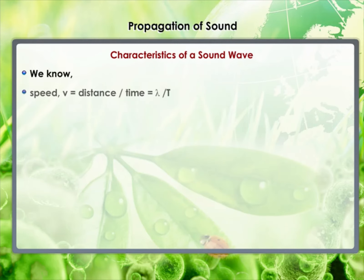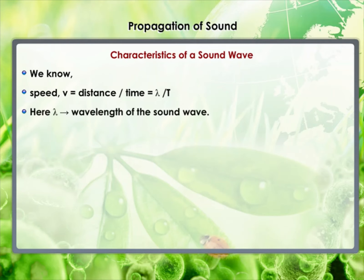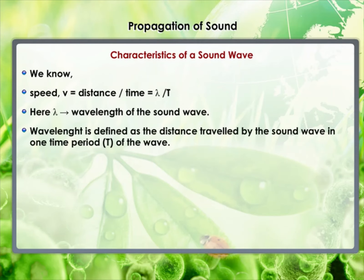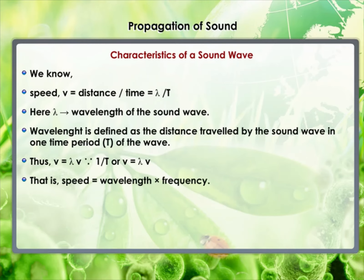The speed of sound is defined as the distance which a point on a wave — such as a compression or rarefaction — travels per unit time. Speed v = distance/time = λ/T, where λ is the wavelength of the sound wave — the distance travelled by a sound wave in one time period T. Since ν = 1/T, we get v = λν, i.e., speed equals wavelength multiplied by frequency. The speed of sound remains almost the same for all frequencies in a given medium under the same physical conditions.